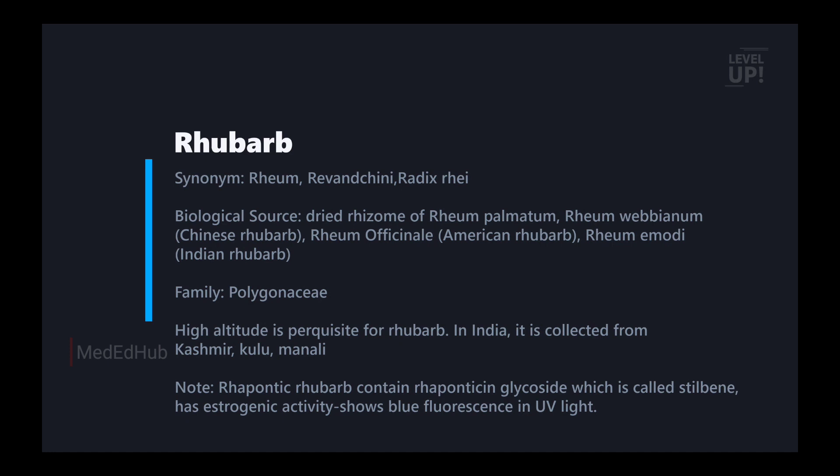Rhupontic rhubarb contains rhuponticin glycoside which is called Stilbene. It has estrogenic activity. This rhubarb is rhupontic rhubarb. It is called rhuponticin glycoside. It is detected by blue fluorescence under UV light. It has estrogenic activity.